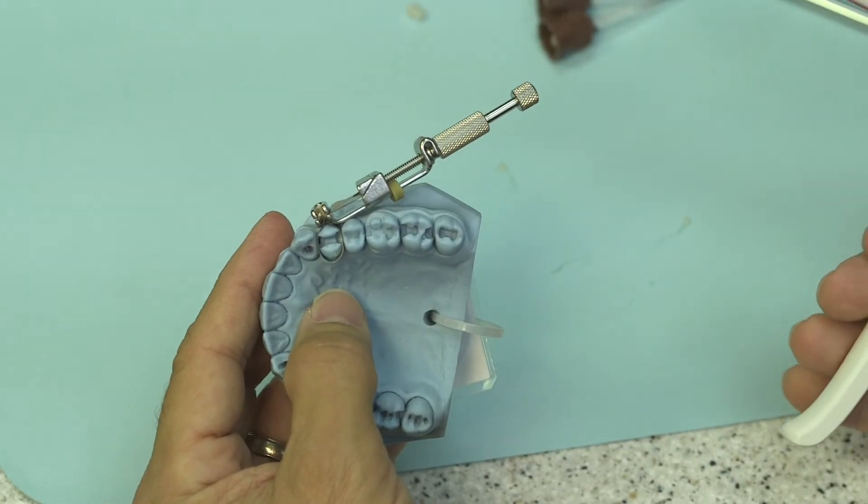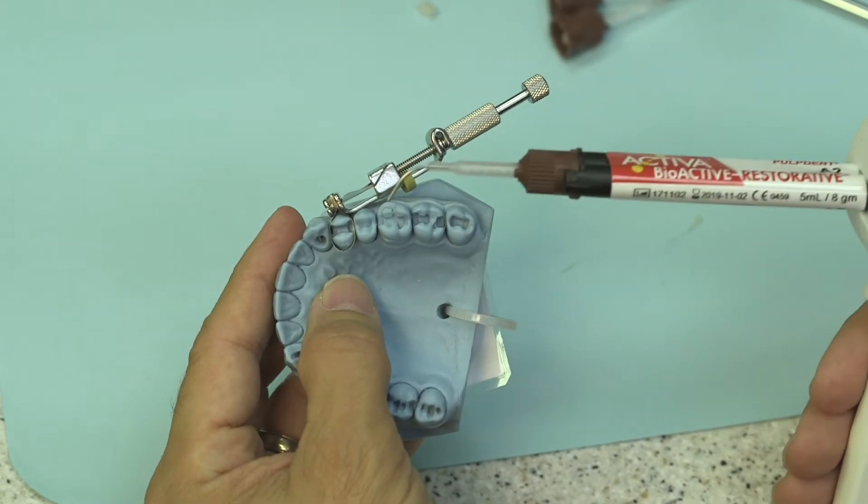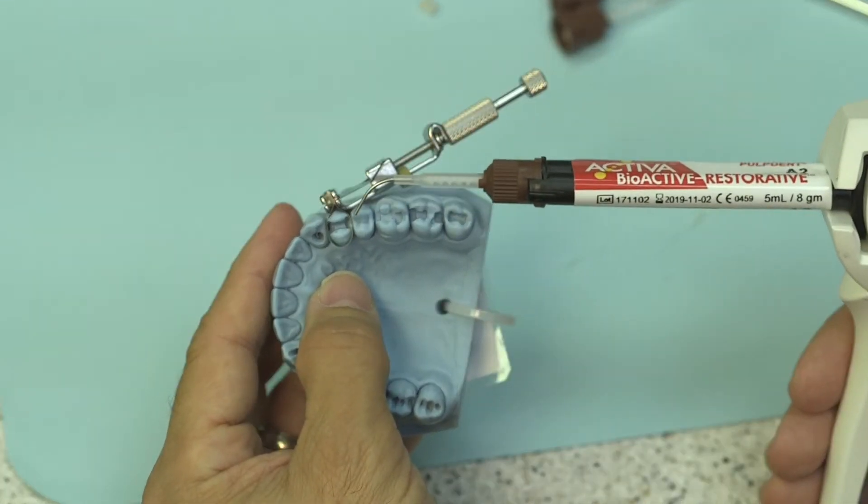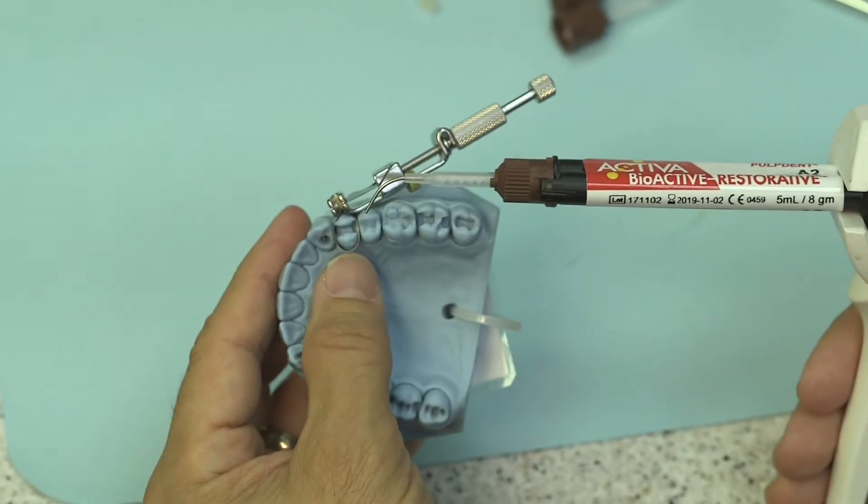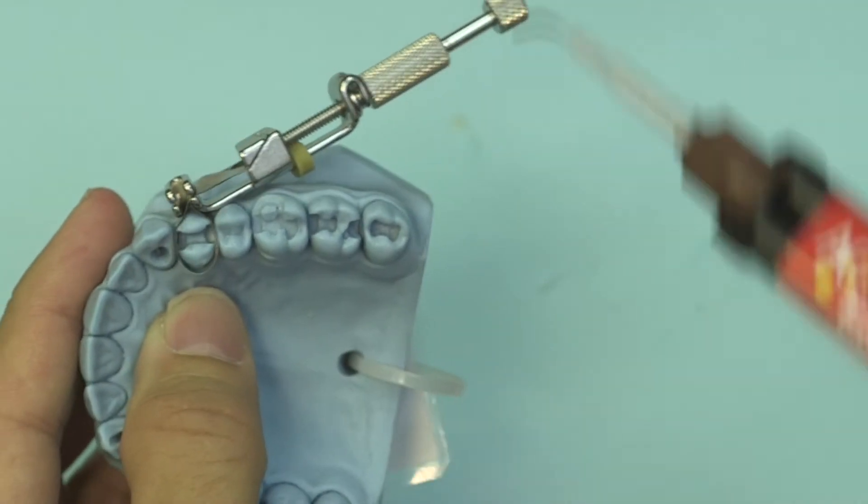So I've placed another tip onto the Activa material and that's the enamel of the restoration. We've placed our bonding material within there and cured that according to manufacturer's instructions. We're now going to go ahead and fill this restoration.